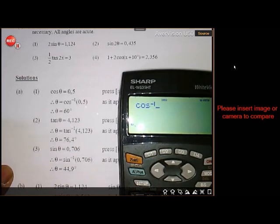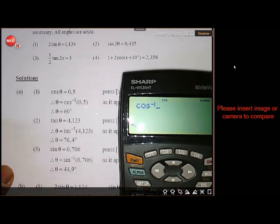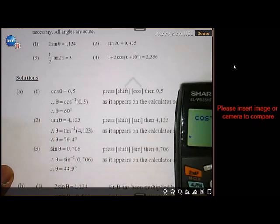It will be second function or shift cos. Remember now? That is what you should do. Then you put in your 0.5, and you'll get your answer of 60 degrees. Right, I'm sure you all can still do that.